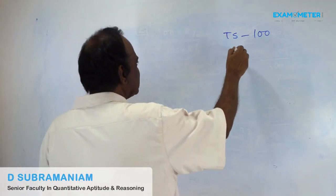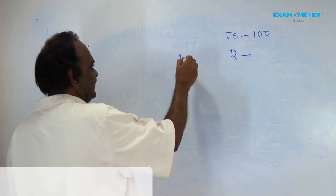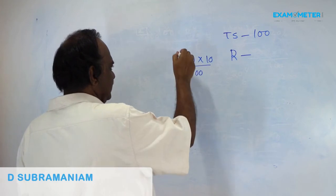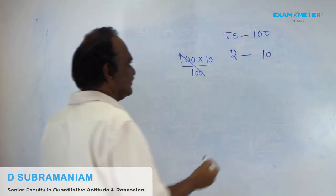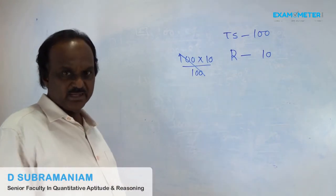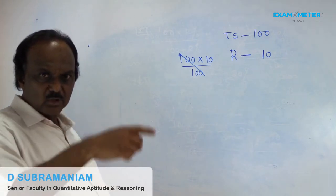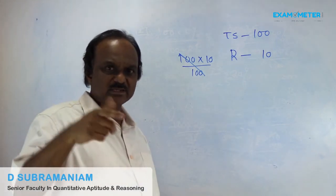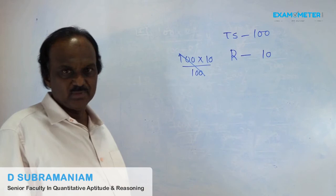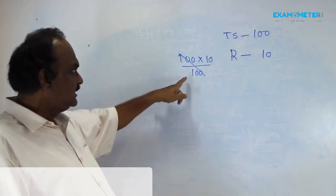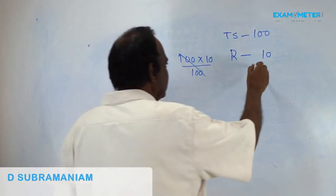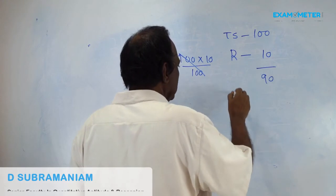He is spending 10% on rent. That is 100 × 10/100 = 10 rupees. 10% means cut one zero — 100 becomes 10. Don't do this rough work in the examination as time will not be there. The balance is now 90.